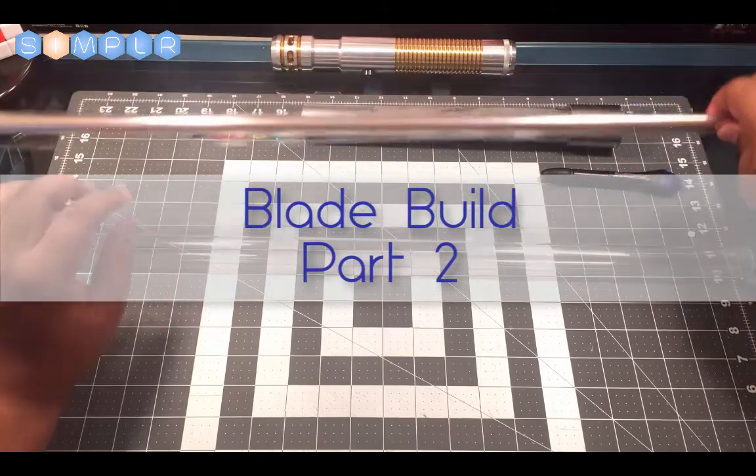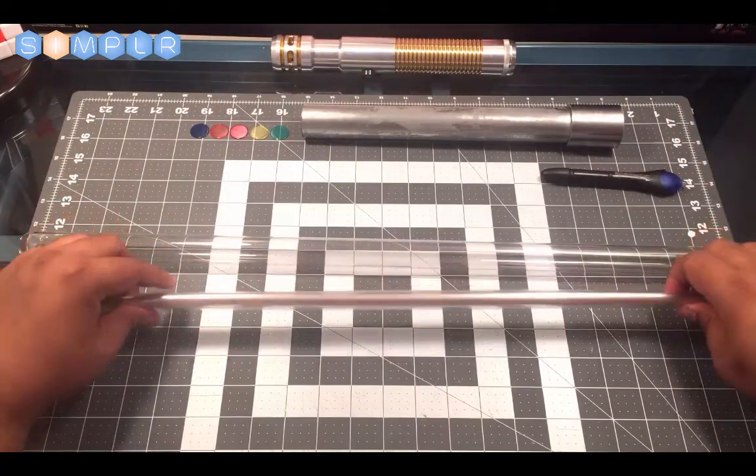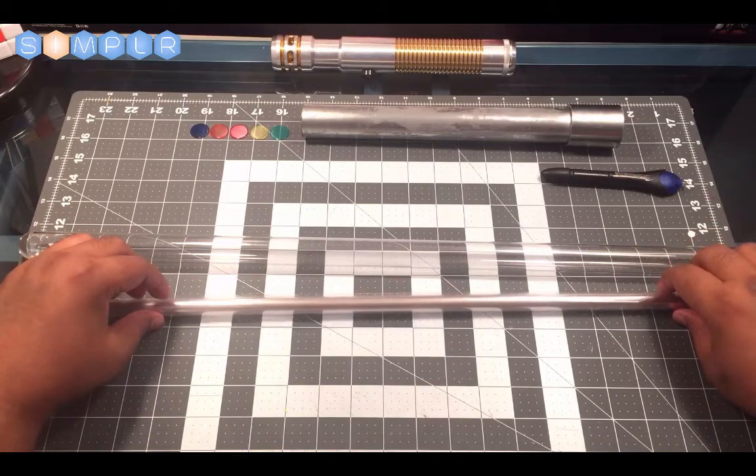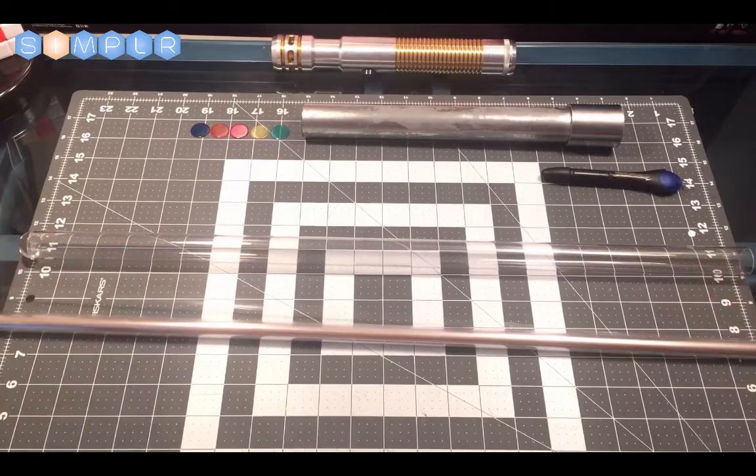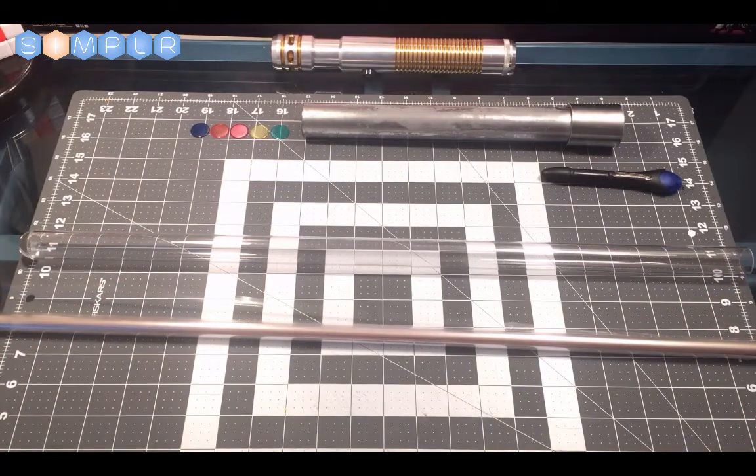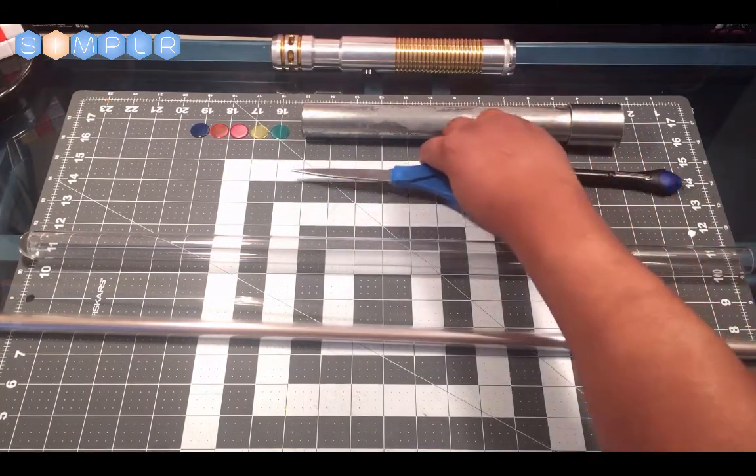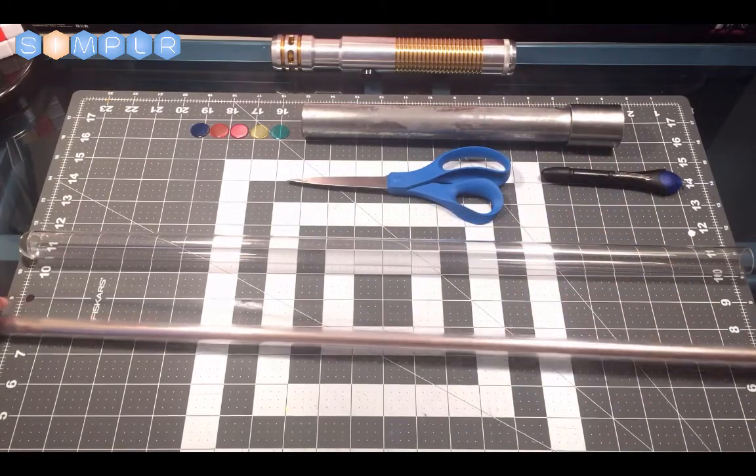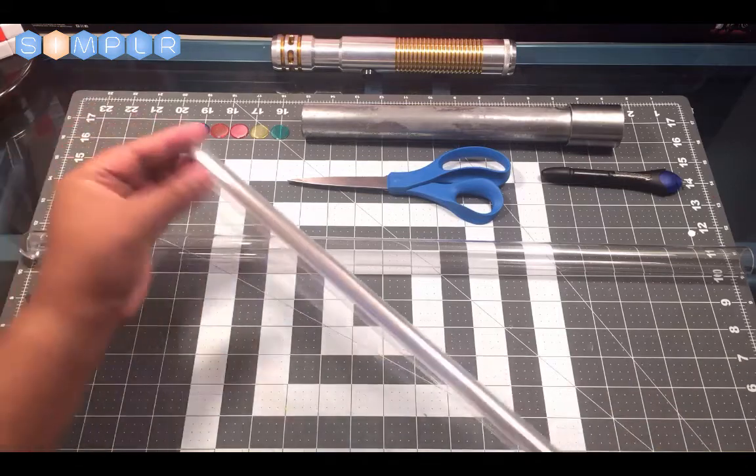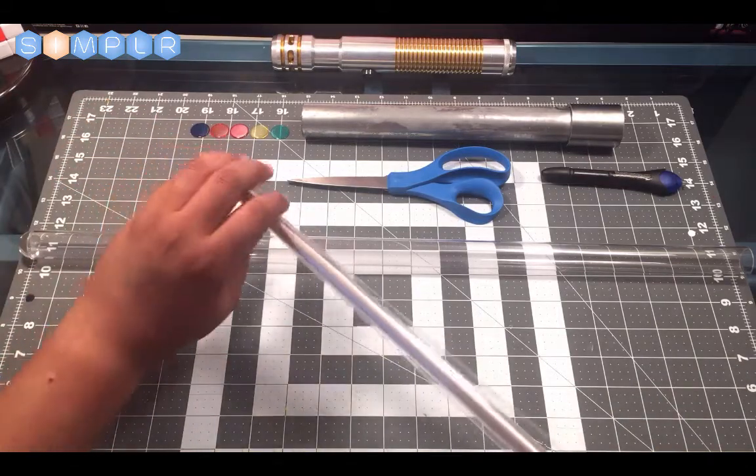Insert it into our tube. You'll want to grab a pair of scissors for this part as well, and you'll see why in a second. Go ahead and take your wrapped cellophane.